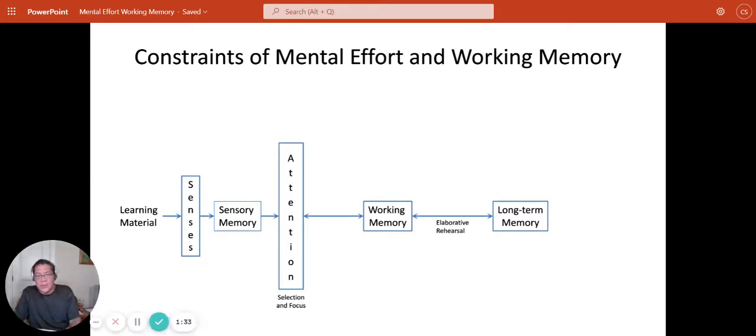Let's take a closer look at what's happening with these constraints in the memory system. Here's a simplified version of a human memory system. We start on the left with the learning materials, which are in the environment, and the student has to take in the information through their senses, primarily hearing and vision. All that information goes into sensory memory. From here, attention will select some of that information from sensory memory for further processing.